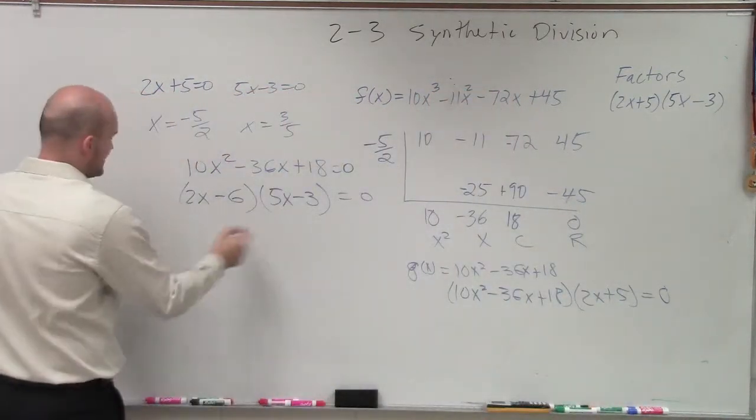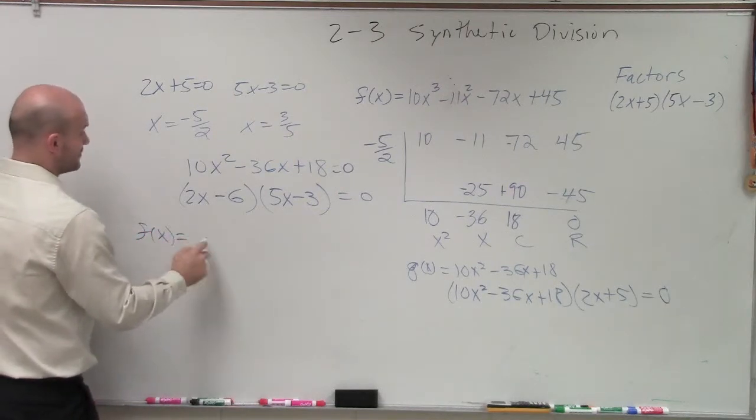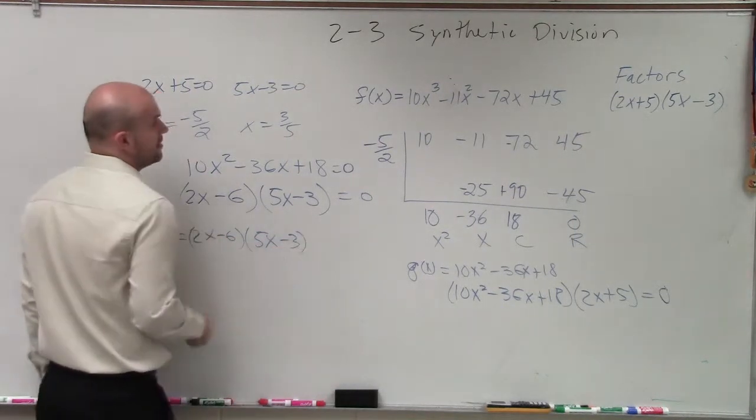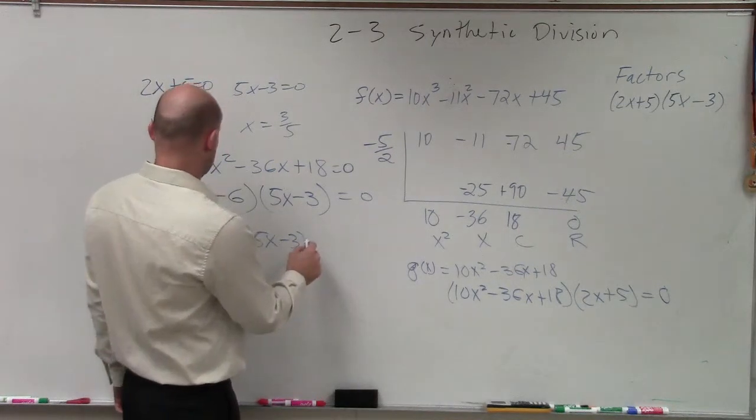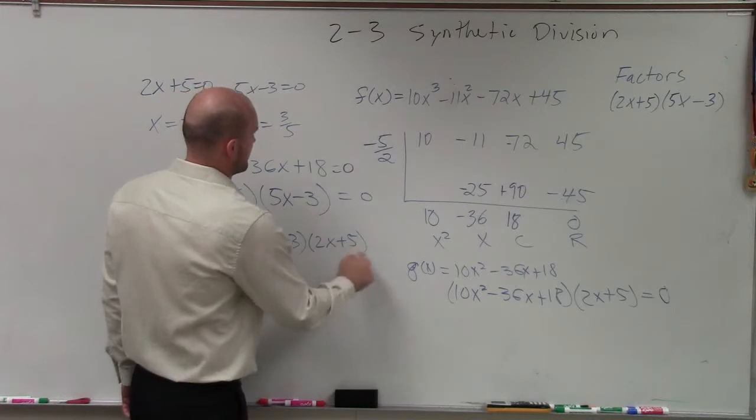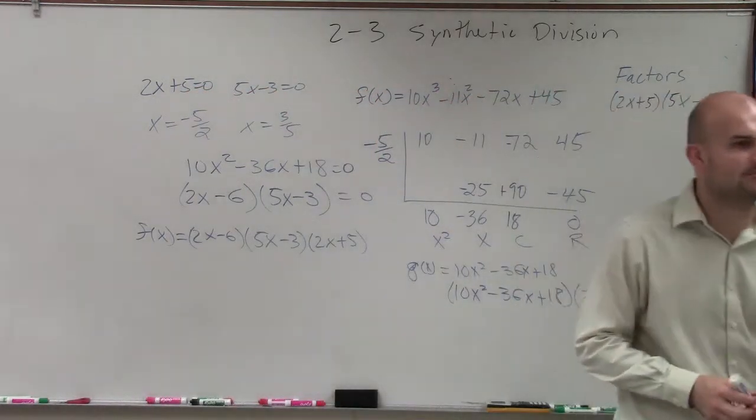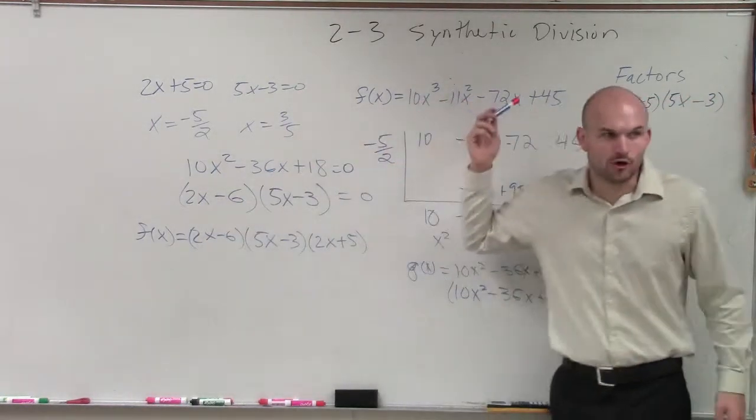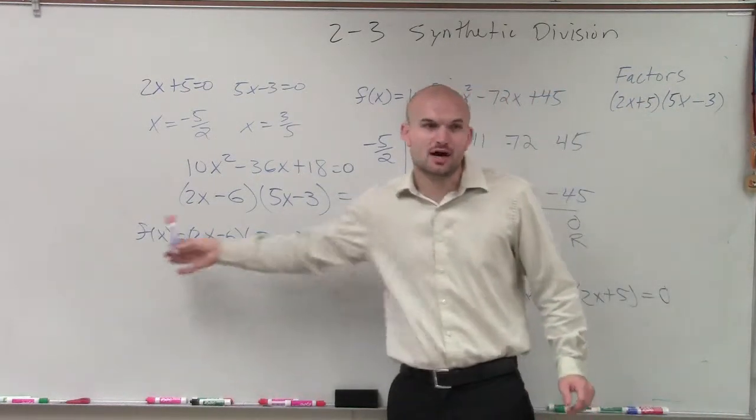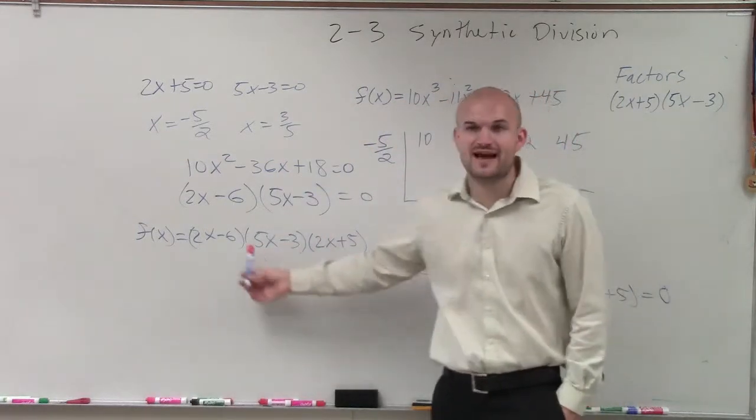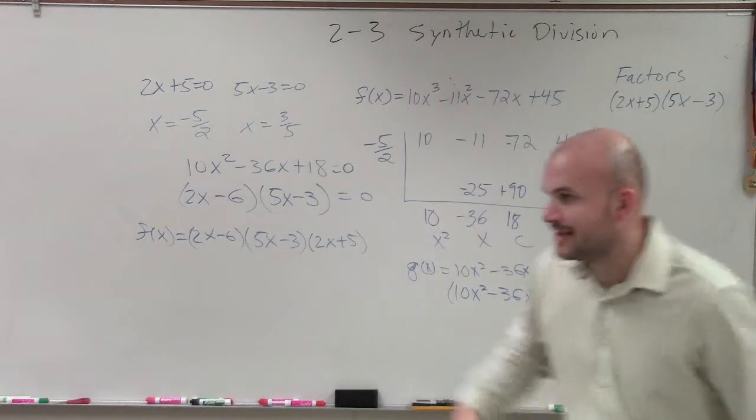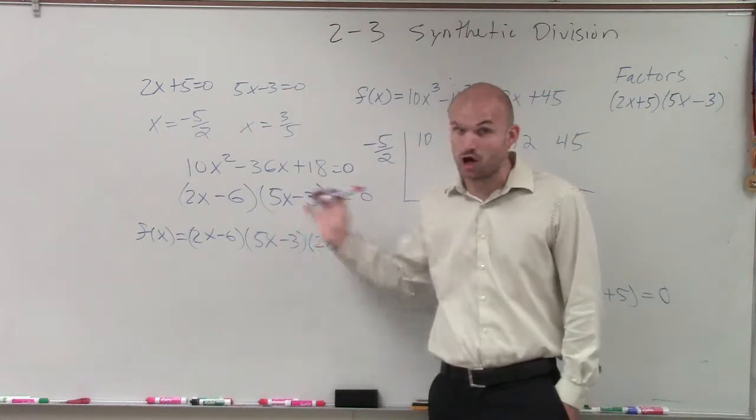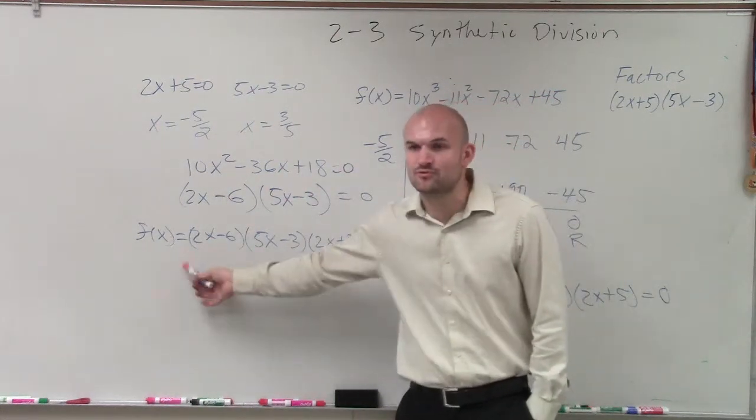So now, I can say that if I was going to write this, f of x equals 2x minus 6, 5x minus 3 times 2x plus 5. What do all three of those factors multiply to give me? My f of x. So what I've done is I've taken my polynomial and written it as a product of the factors. This is what we call linear factorization. And I will ask you to give me a polynomial and write it as a product of its factors.